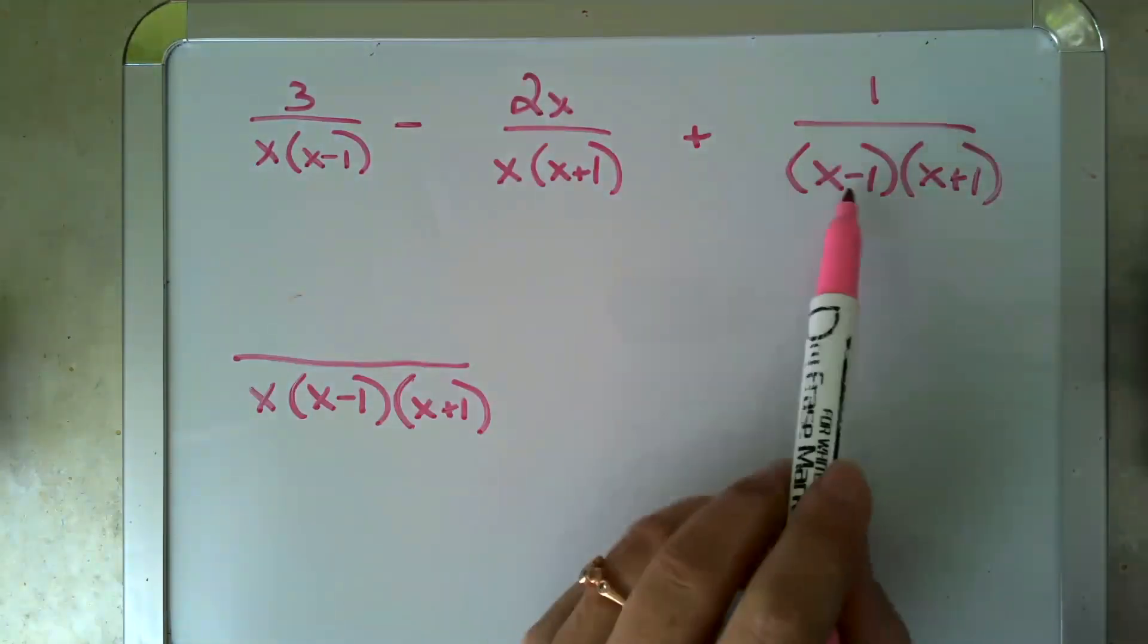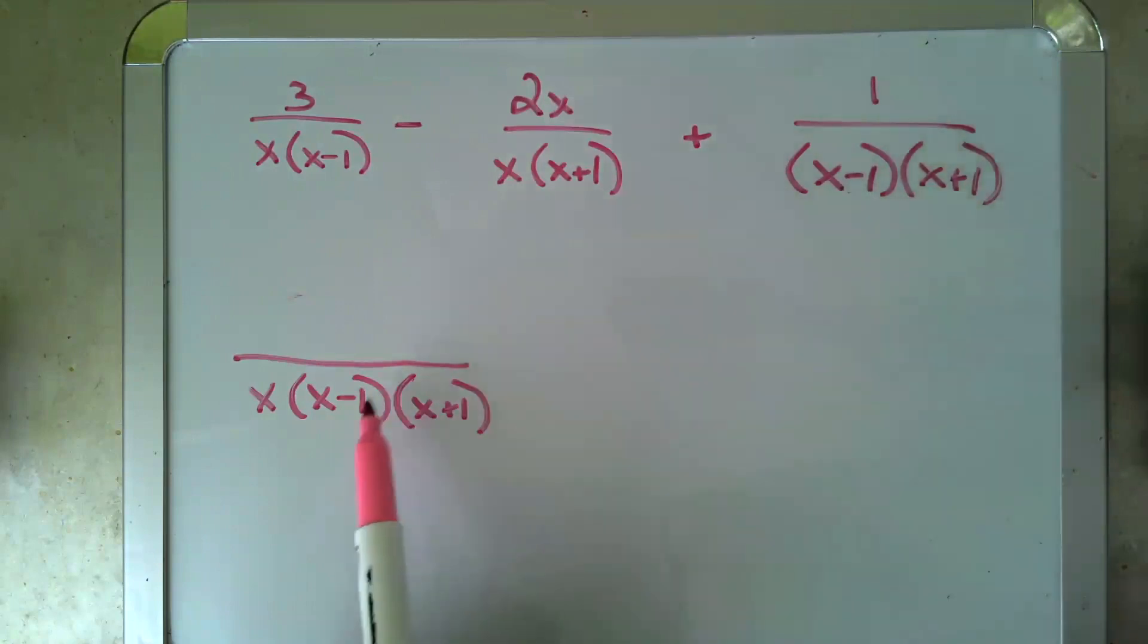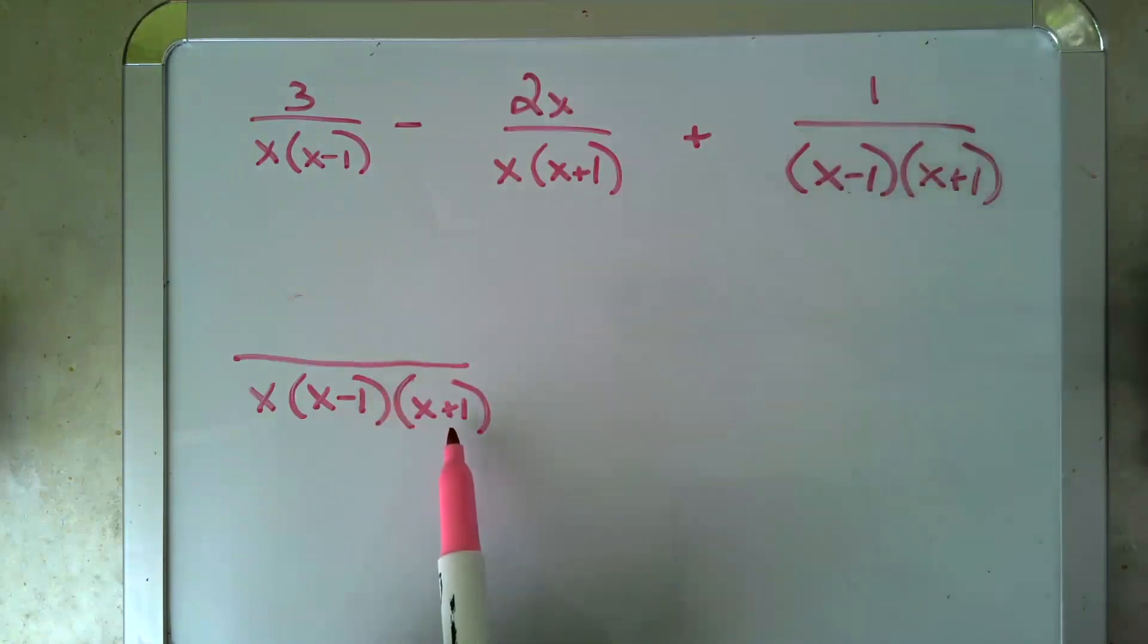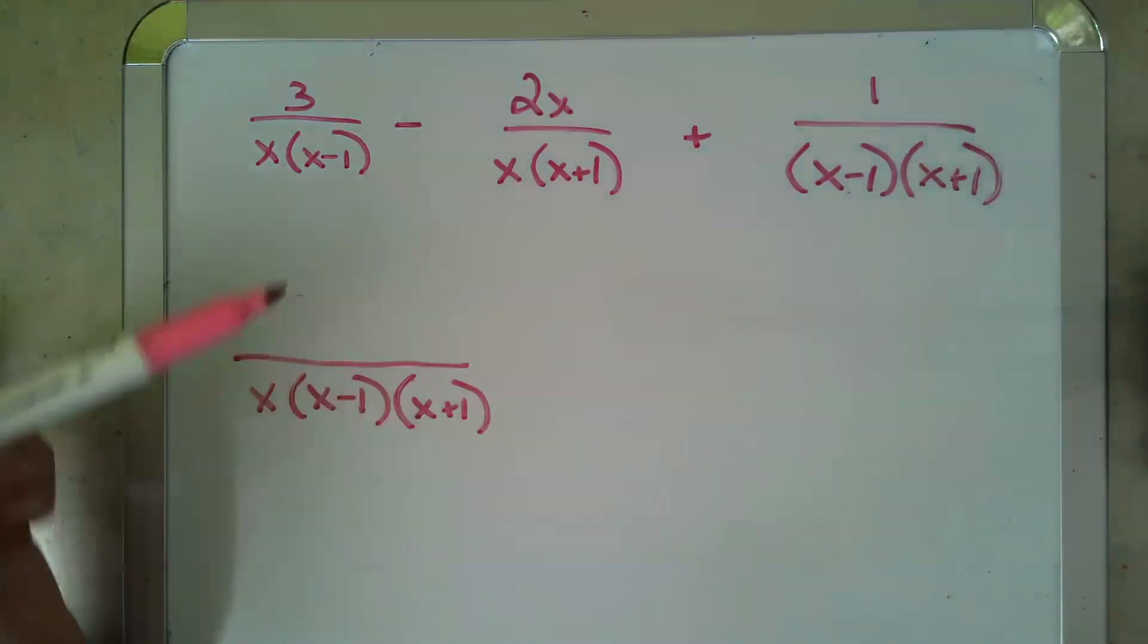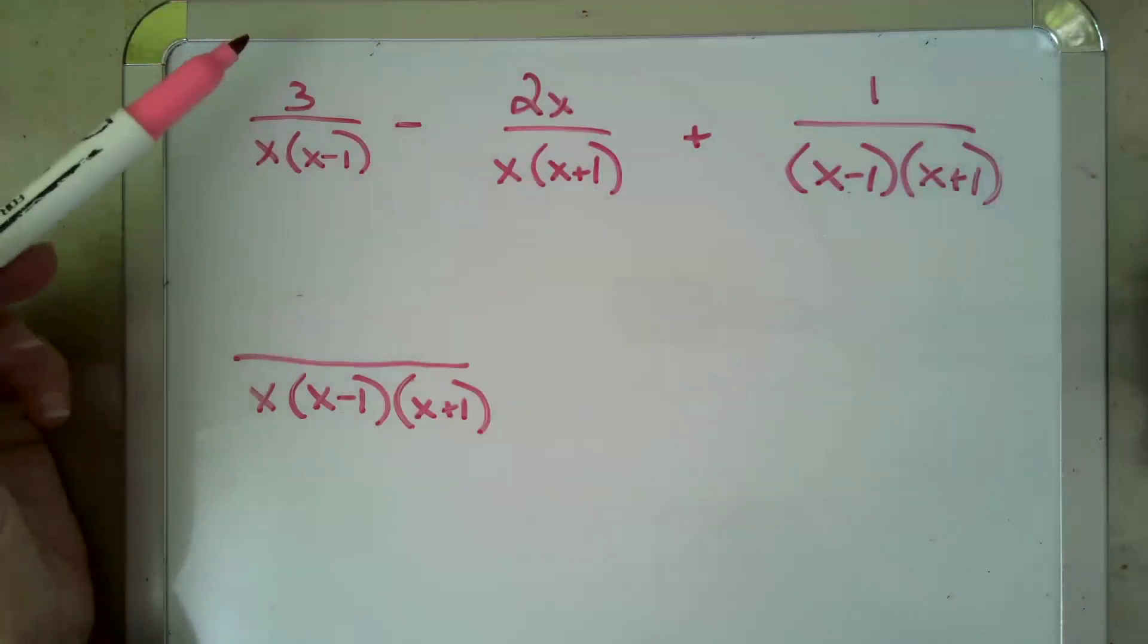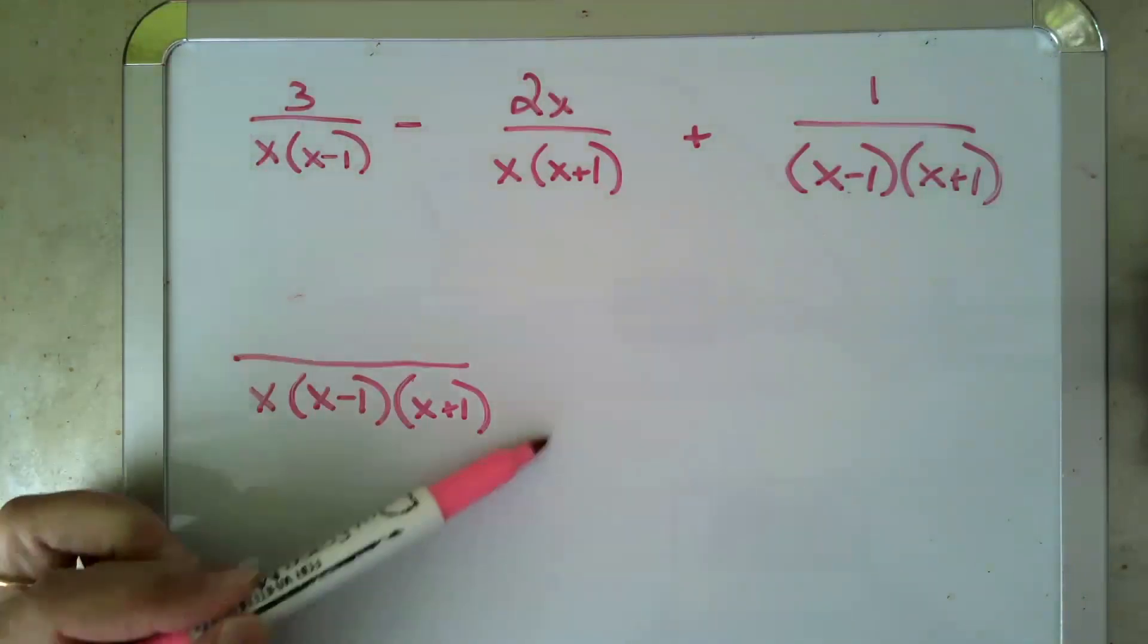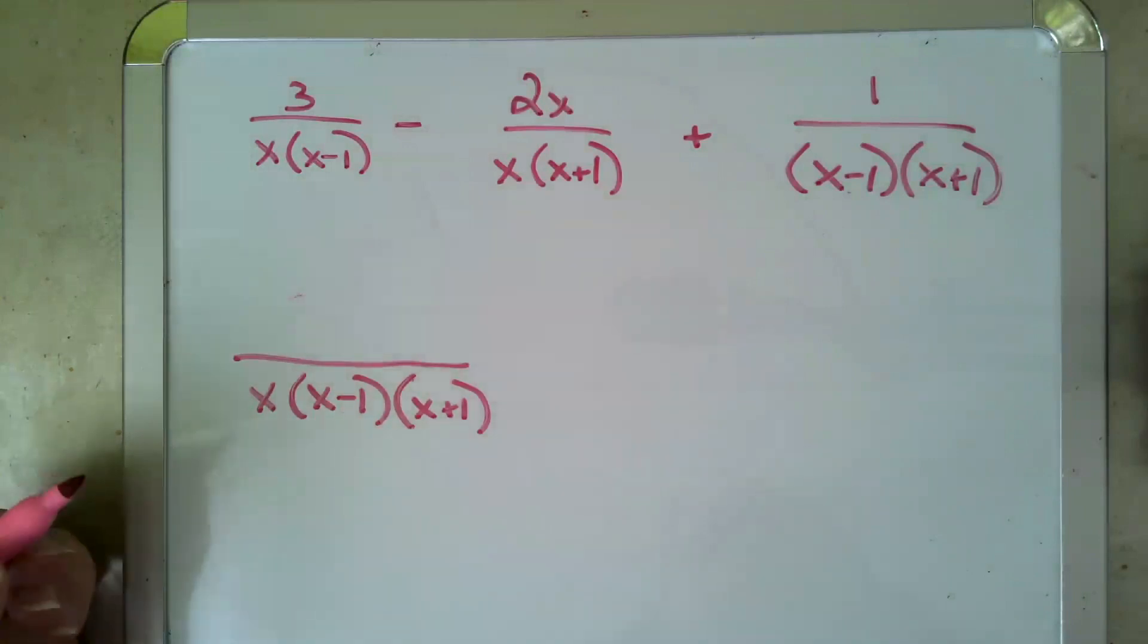And then when I look at this fraction, it has the x minus 1, which I've already accounted for, the x plus 1, which I've already accounted for. So nothing new there. So now I go back to each fraction and I say, okay, for my first fraction, I already have the x and the x minus 1, so what I'm missing is the x plus 1.